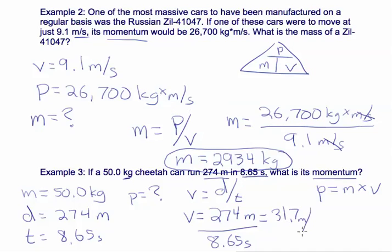So here, we say p equals m times v, so p equals 50 kilograms times 31.7 meters per second.